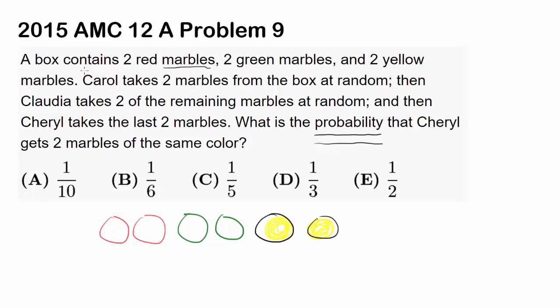What's going to happen to this box? Carol comes up and takes 2 away from the box at random. And then Claudia comes up, takes 2 away at random. And Cheryl takes the last 2 away. What is the probability that Cheryl, the last person taking the marbles away, gets 2 of the same color?